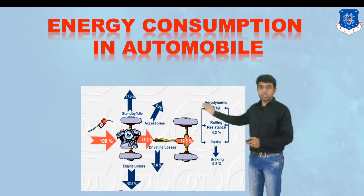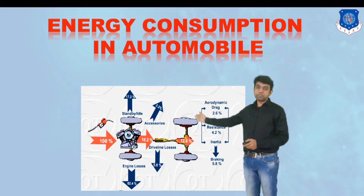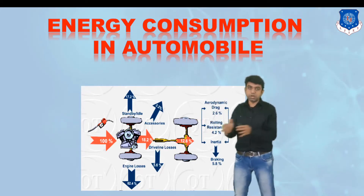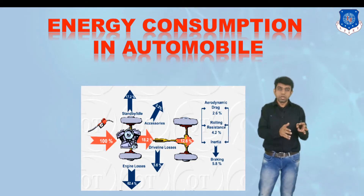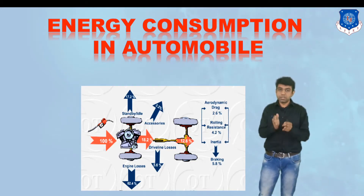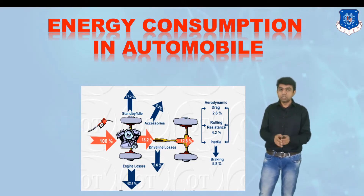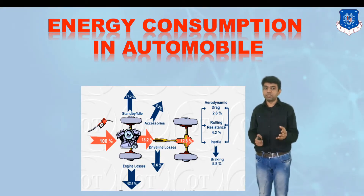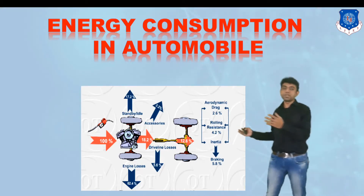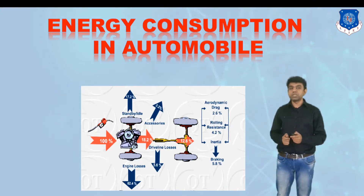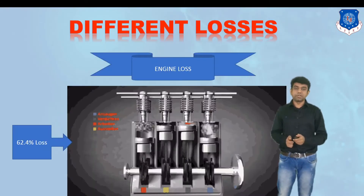For example, if we are supplying 100% of the fuel to the engine, not even 25% is converted into usable energy. The normal efficiency of most vehicles is around 15%. So apart from that, 85% of the energy has been lost at different components, which we need to elaborate in detail.